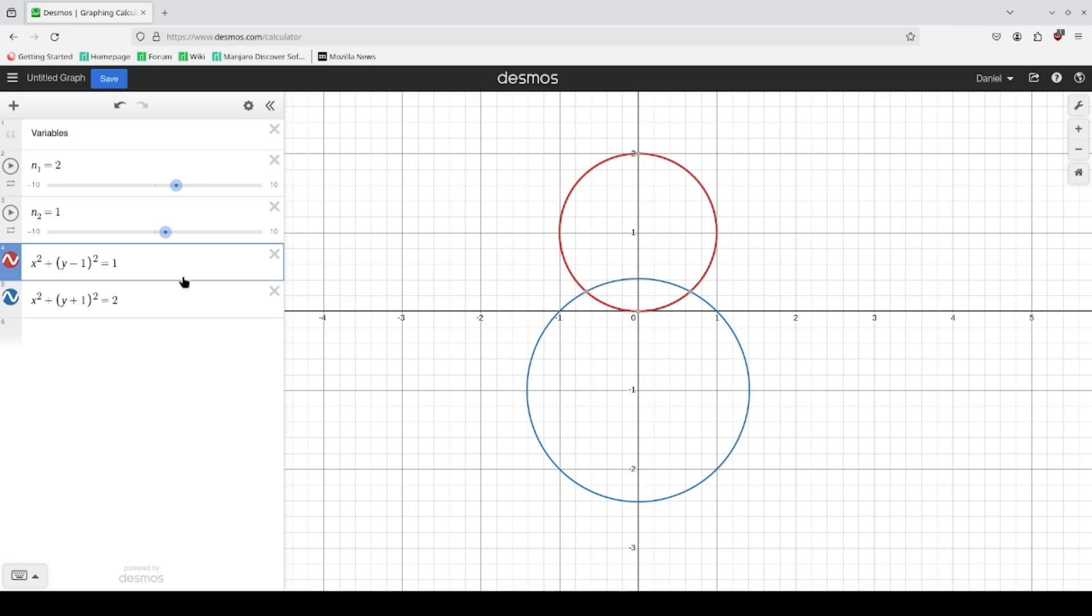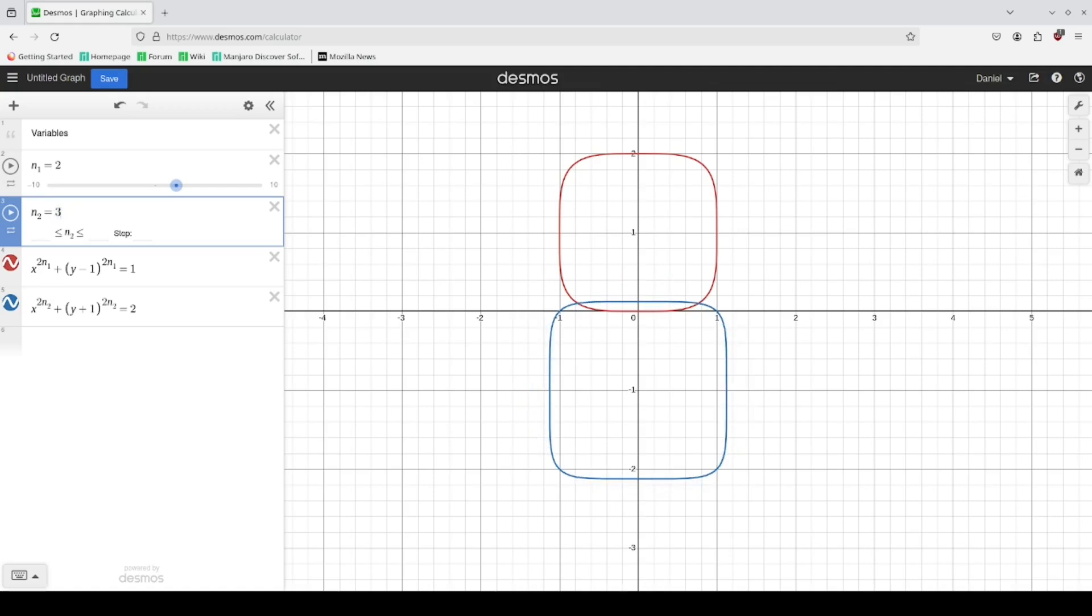For this example I'm gonna make the top a little flatter than the bottom half. This would be two times n sub one. The reason we're doing this is we want to guarantee an even number. For the bottom half we would do two times n sub two.